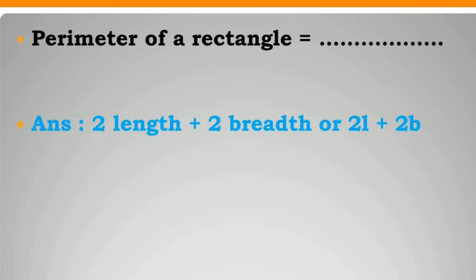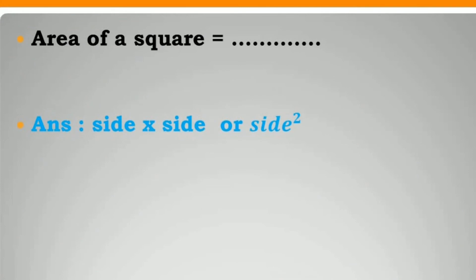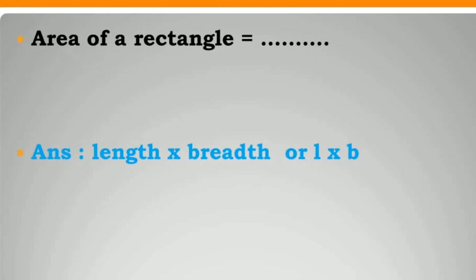Perimeter of rectangle is equal to 2 length plus 2 breadth, or 2L plus 2B. Area of square is equal to side into side, or side square. Area of rectangle is equal to length into breadth.